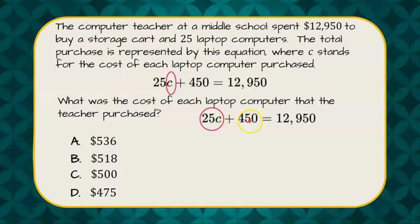So it's being added by 450. The inverse of add 450 is to subtract 450 creating a zero pair. So if we subtract 450 from the left side of the equation we must also subtract 450 from the right side.